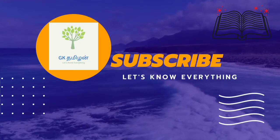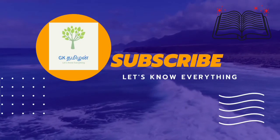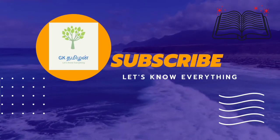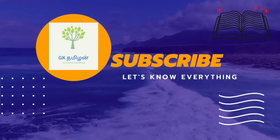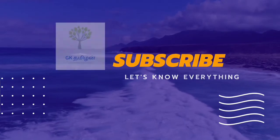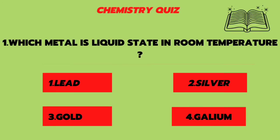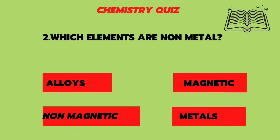Hi guys, welcome to our channel GK Tamil. I'm going to ask you 10 chemistry questions. First question: which metal is in liquid state at room temperature? Lead, silver, gold, or gallium? The answer is gallium.